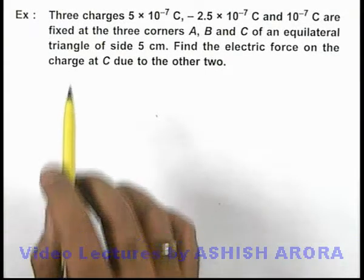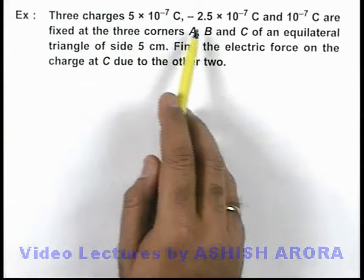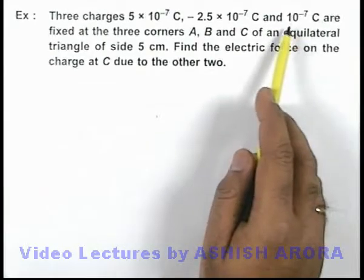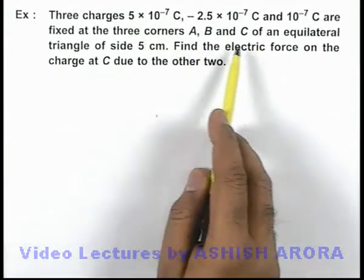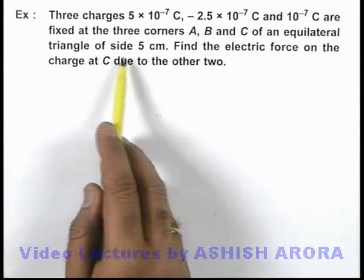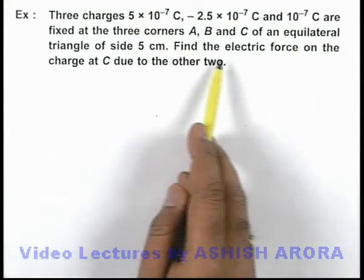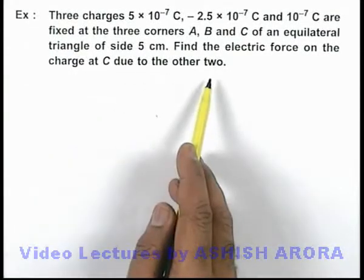In this example we are given that three charges: 5 × 10⁻⁷ coulomb, -2.5 × 10⁻⁷ coulomb, and 10⁻⁷ coulomb are fixed at the three corners A, B, and C of an equilateral triangle of side 5 centimeter. And here we are required to find the electric force on the charge at C due to the other two.